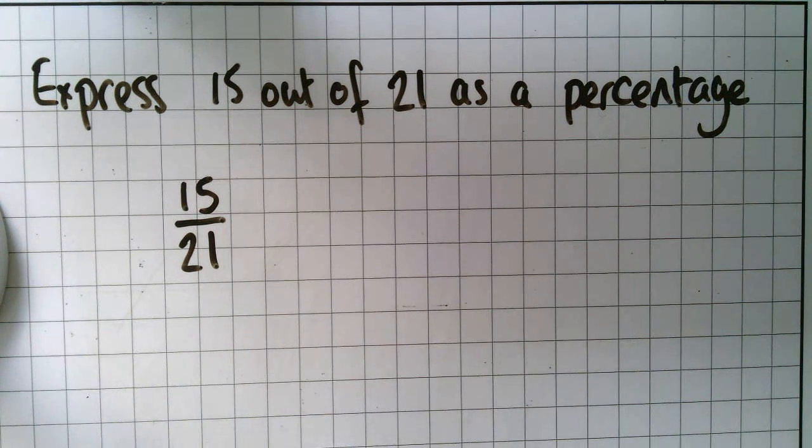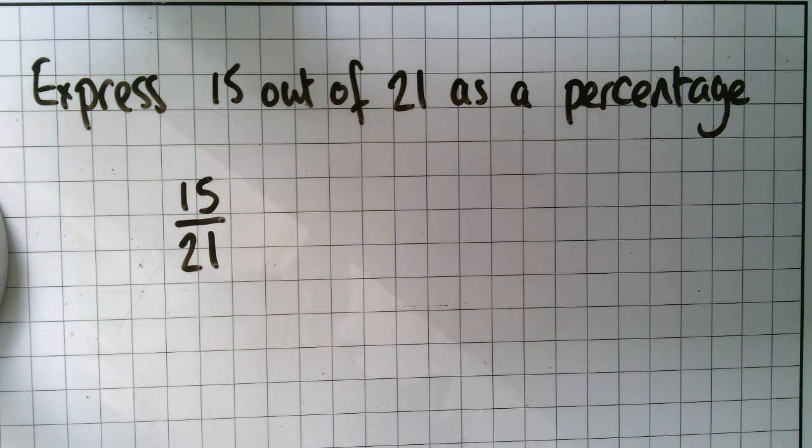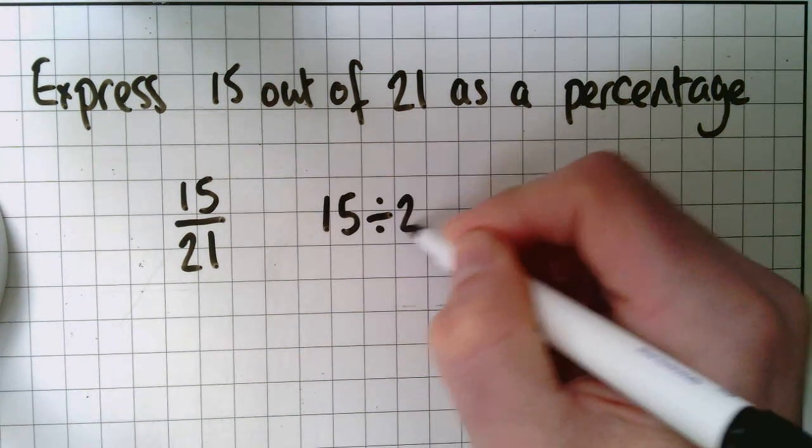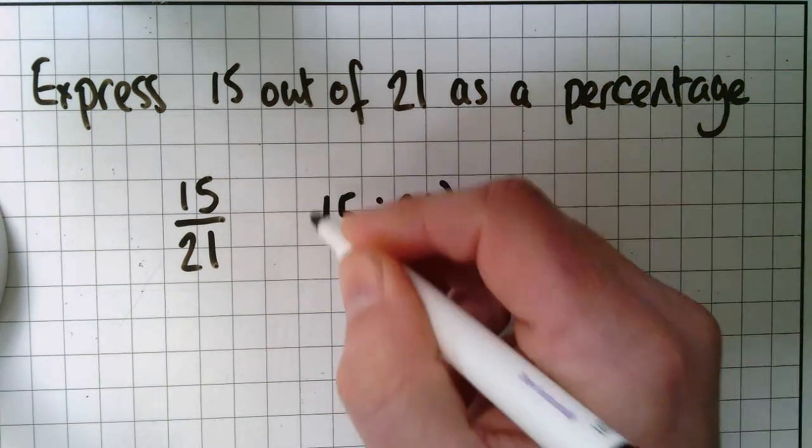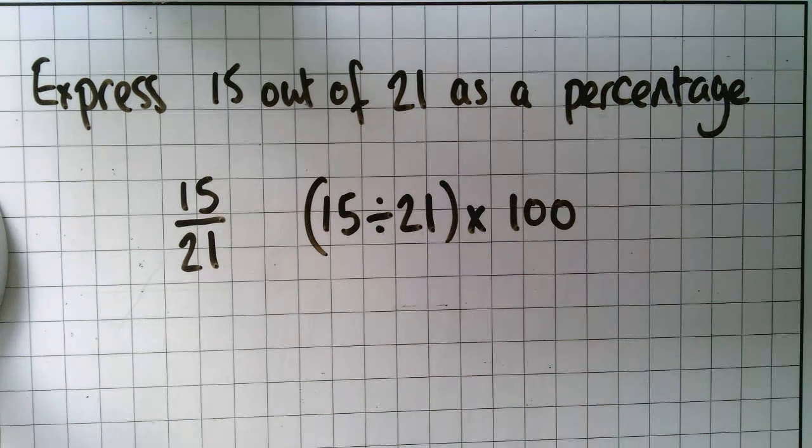At this stage I probably wouldn't try and change into something over 100. I would just do the calculation of 15 divided by 21 then I would multiply the answer by 100 to actually convert that into a percentage.